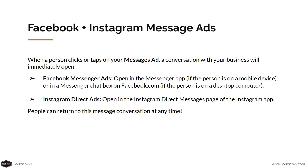When a person clicks or taps on your message ad, a conversation with your business will immediately open. The two main types: first, Facebook Messenger ads — this opens in the Messenger app on mobile, or a Messenger chat box if the user is on Facebook.com on a desktop. For Instagram Direct ads, this opens an Instagram direct message within the Instagram app. The third type is WhatsApp, which also opens on their mobile device and starts a conversation within WhatsApp.